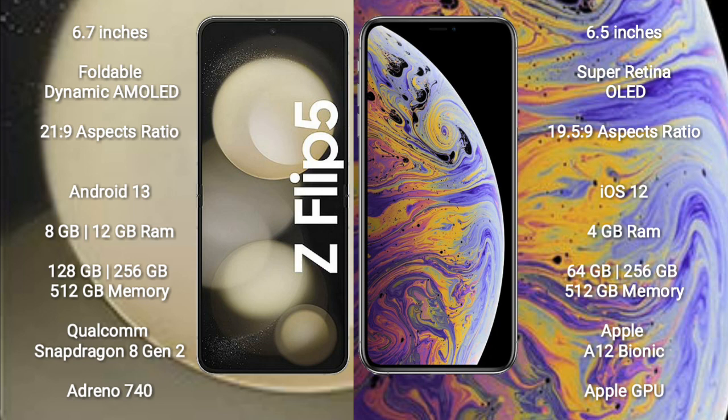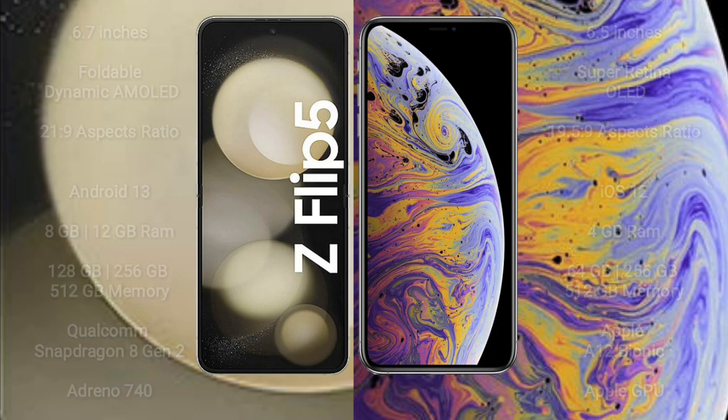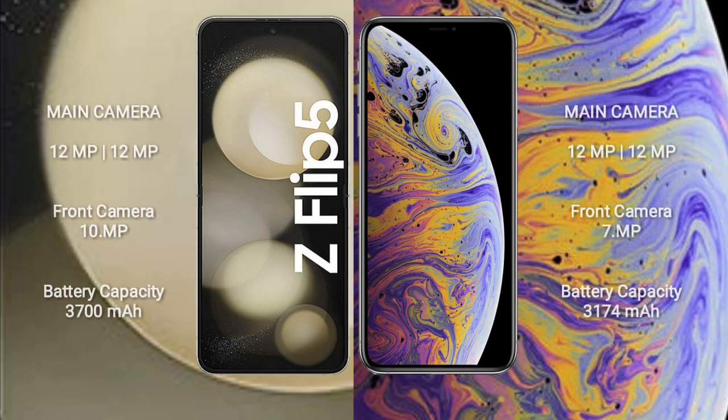The iPhone XS Max runs on iOS 12 and comes with 4 GB RAM and 64 GB, 256 GB, or 512 GB internal storage, powered by the Apple A12 Bionic processor with Apple's integrated GPU.